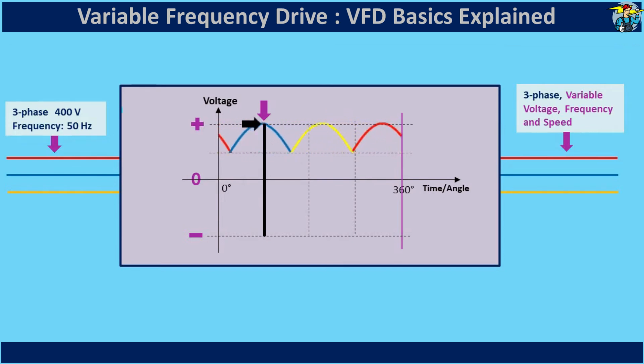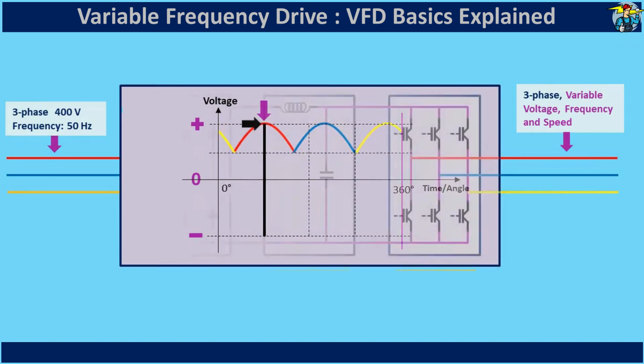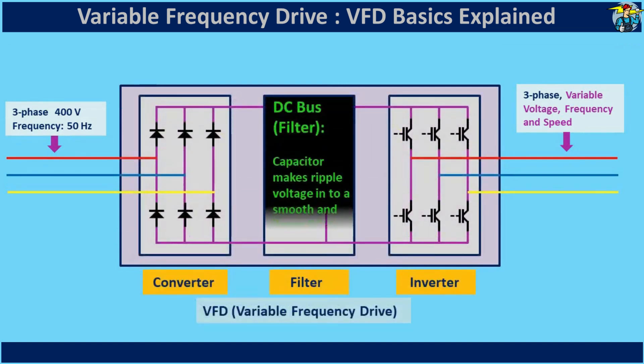To obtain pure, linear DC voltage, the rough DC output must be smoothed. This is the job of the filter, or DC bus.